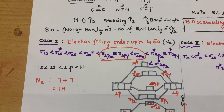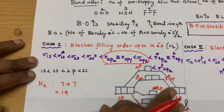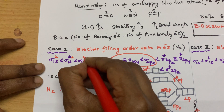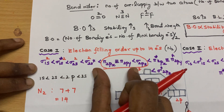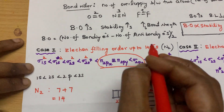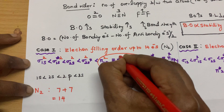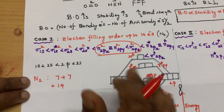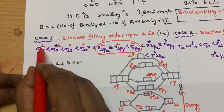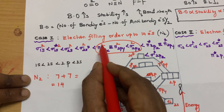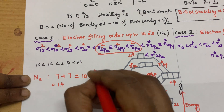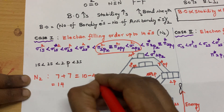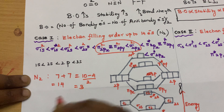Filling the 14 electrons: 2, 2, 2, 2 electrons in the lower orbitals, then for the degenerate orbitals you fill 1, 1, then pair up. Counting: 1 through 12 filled, then 2 more extra gives 14 total. The number of bonding electrons is 10, and anti-bonding electrons is 4. Applying the formula: 10 minus 4 divided by 2 equals 3. So the bond order of N2 is 3.